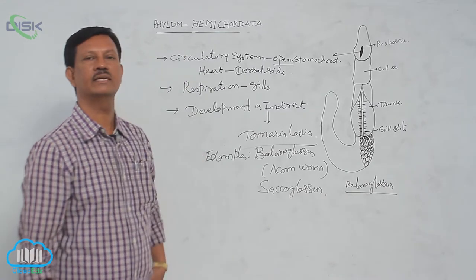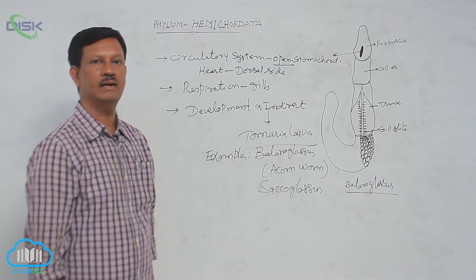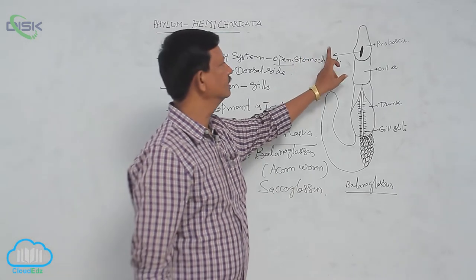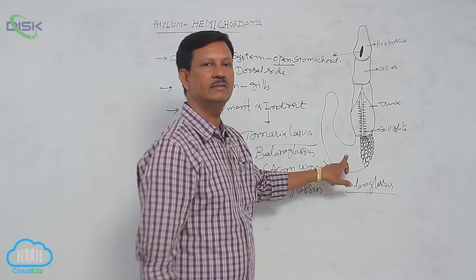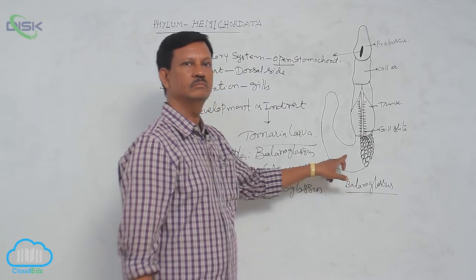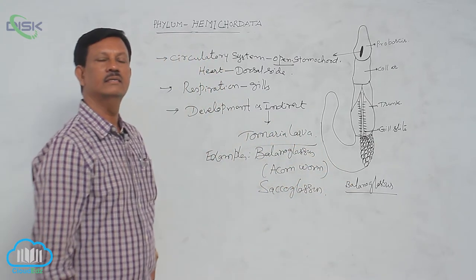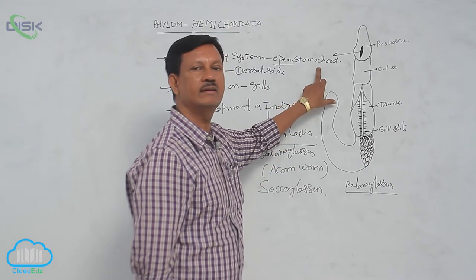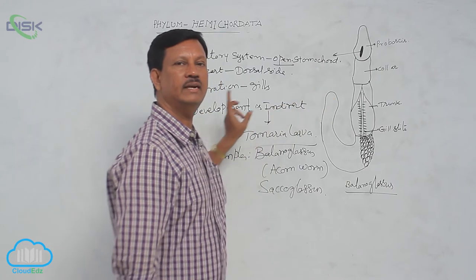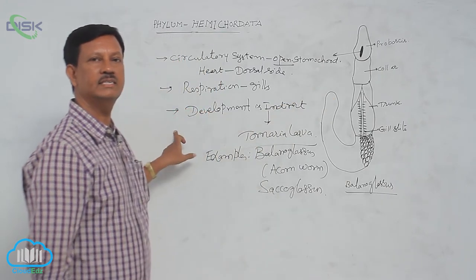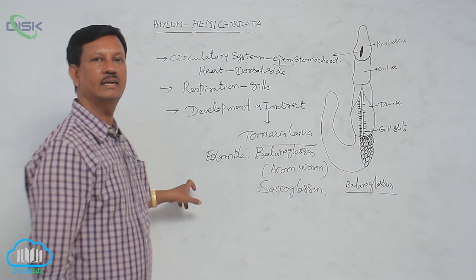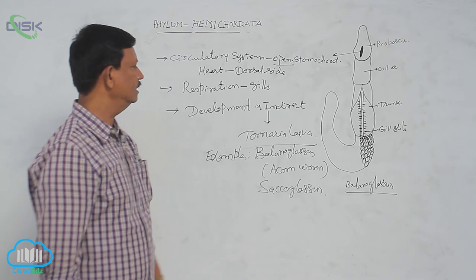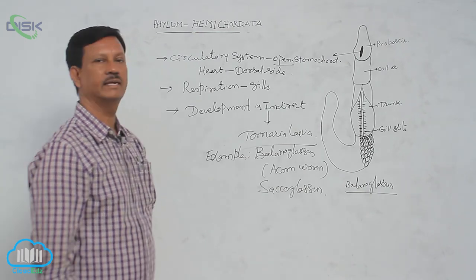To recollect the important characters: Hemichordata means half chordates; they are found in marine water; the body is divided into proboscis, collar, and trunk region. Due to the doubtful nature of the stomochord, they are included with non-chordates. Circulatory system is open type, respiration is by gills, and in the life history the tornaria larva is present. These are the special characters of Hemichordata.